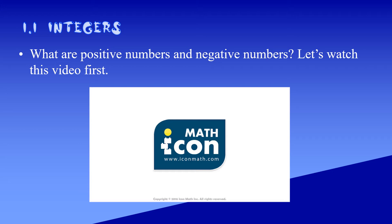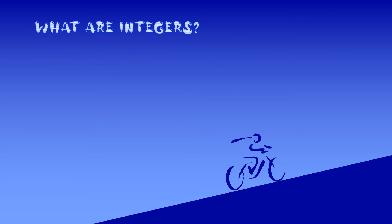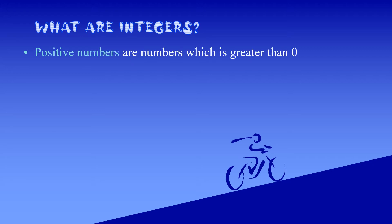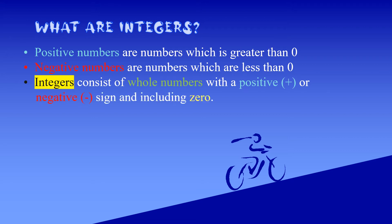A fish swimming 20 metres below sea level — below means negative — so we write negative 20. That is how we use positive and negative numbers in our life. Now, what are integers? Positive numbers are numbers greater than zero, and negative numbers are less than zero. Integers consist of whole numbers with a positive or negative sign, including zero — like positive one and negative one.